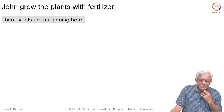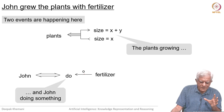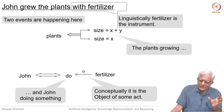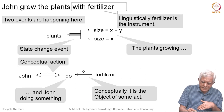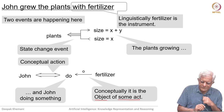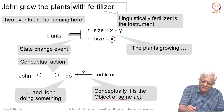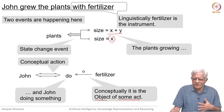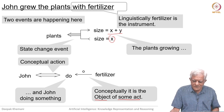Let us look at this sentence: 'John grew the plants with fertilizer.' There are two events happening. One is that the plants are growing — some kind of state change event. John is doing something with the fertilizer. This whole thing comes from folk psychology, and this is how we represent states qualitatively. The plants are going from size x to size x plus y, and this x plus y represents the fact that the plants are growing.